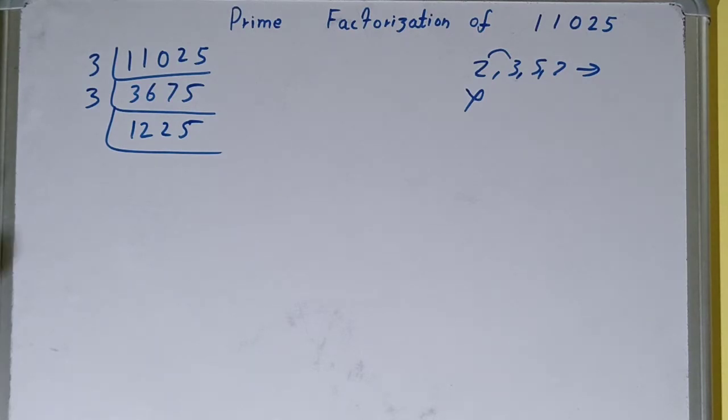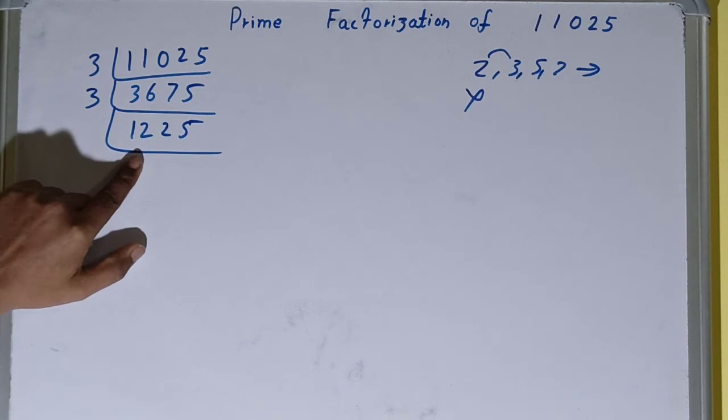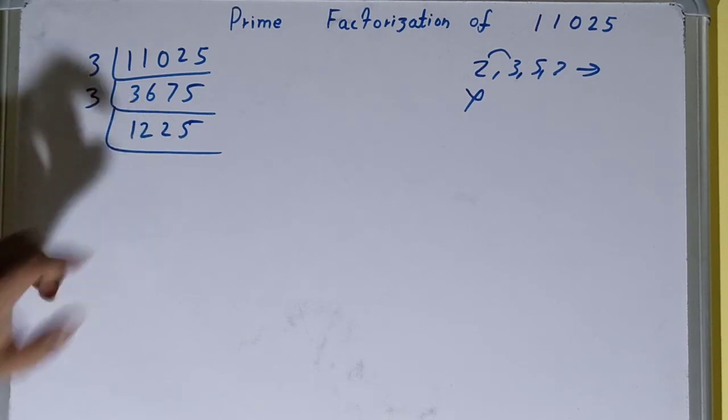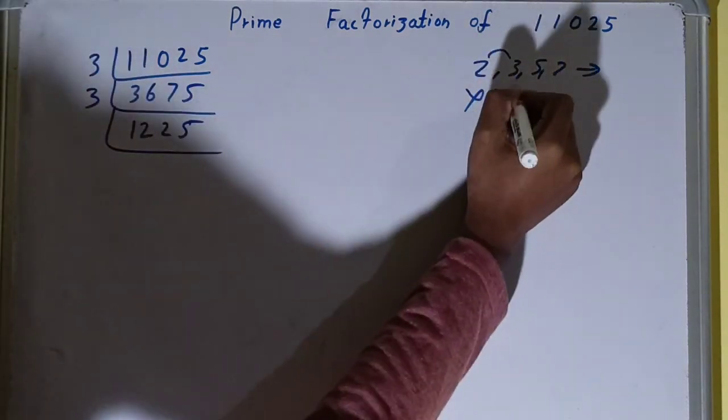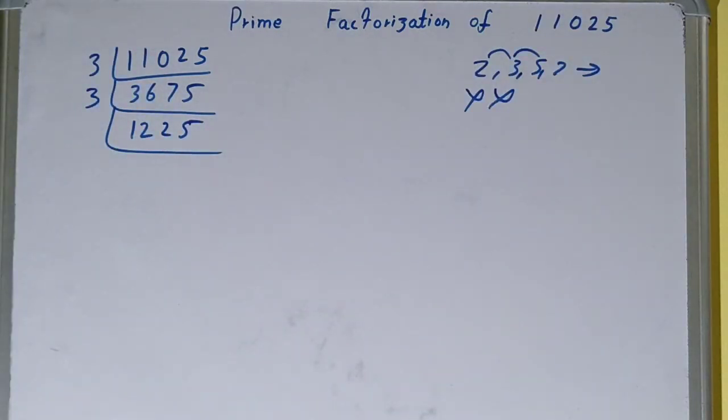Now is this further divisible by 3? We need to check. 3 fours are 12, 0, 2, 5. No, it is not divisible. So we'll be going to the next lowest prime number, that is 5.